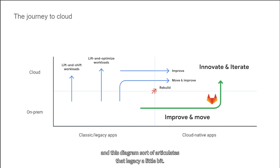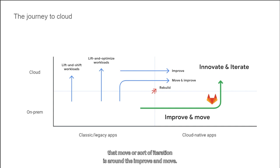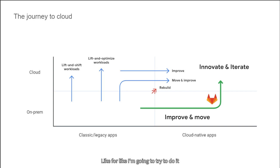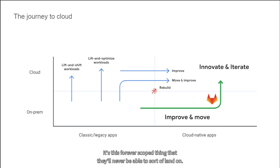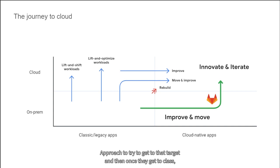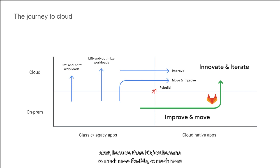This diagram articulates that legacy a bit. There are all sorts of ways to think about how to move to cloud, and where I see GitLab shine is around the improve-and-move approach. Usually what happens is an application decides to move to cloud, they try to move it like-for-like, exactly the same way they did it in the data center. They realize it's not as easy as they thought — there are engineering hiccups, it becomes a forever-scoped thing. So it usually ends up as an improve-and-move approach to reach that target. And once they get to cloud, that's where the real innovation and iteration start, because it becomes so much more flexible and easier to build.